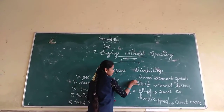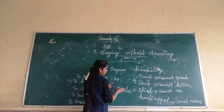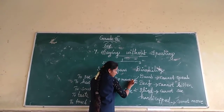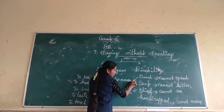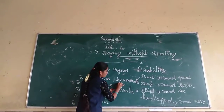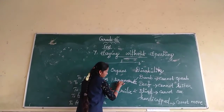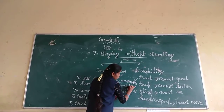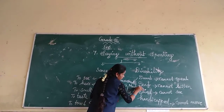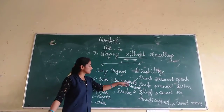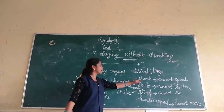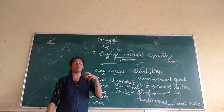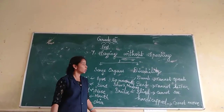Those people also — the deaf and dumb — can understand through lip movement. By using these things, deaf and dumb people understand language. They use these methods for communication as well.